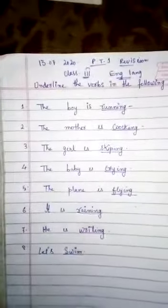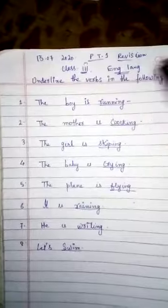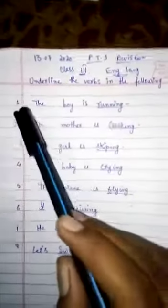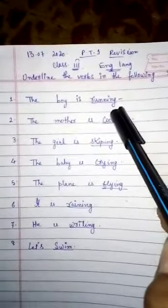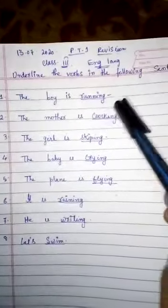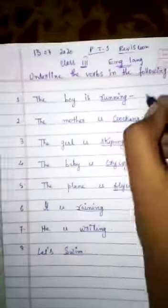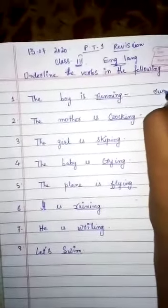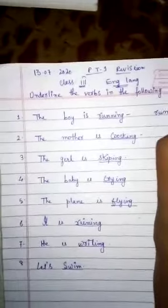So here again, for these sentences you just have to underline the verbs. When I ask the question in the PT1 exam test, I will say what is the verb of these sentences. For example, 'The boy is running' — your answer will be: the verb is running.